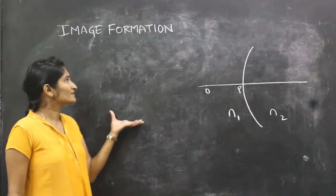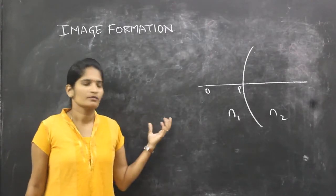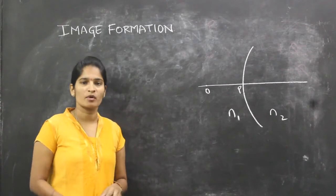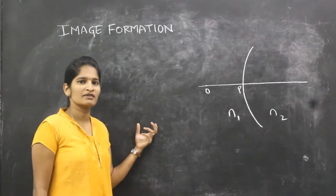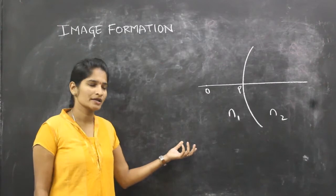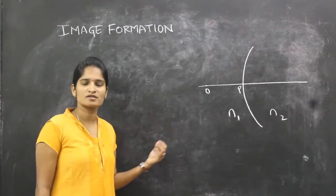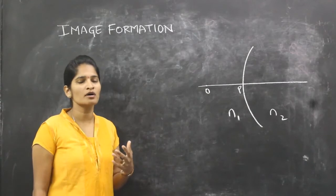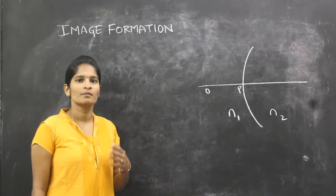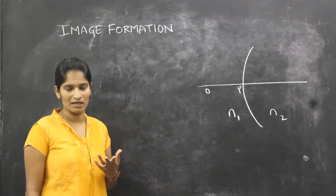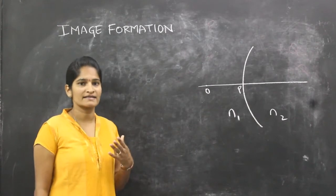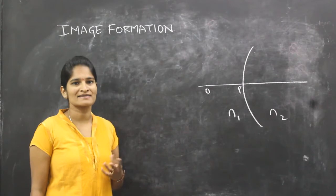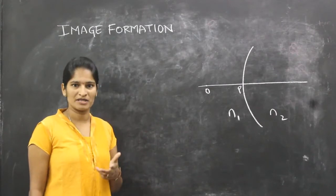Now we will see how the image is formed in the refraction. Already we have seen in the last classes about refraction. When a ray is travelling from rarer medium to denser medium, the refracted ray bends towards the normal. And when a ray travels from denser medium to rarer medium, the ray bends away from the normal. We have also seen the cases when the ray is travelling along the principal axis and parallel to the principal axis.